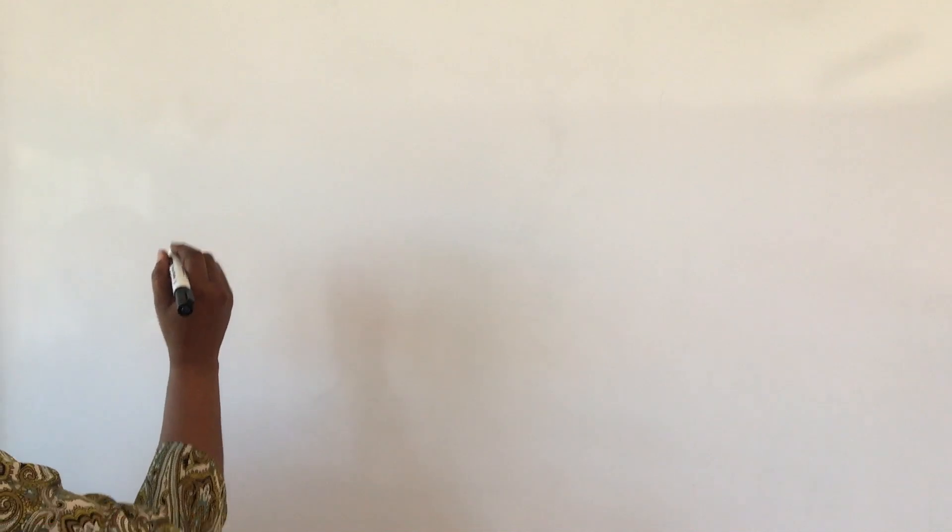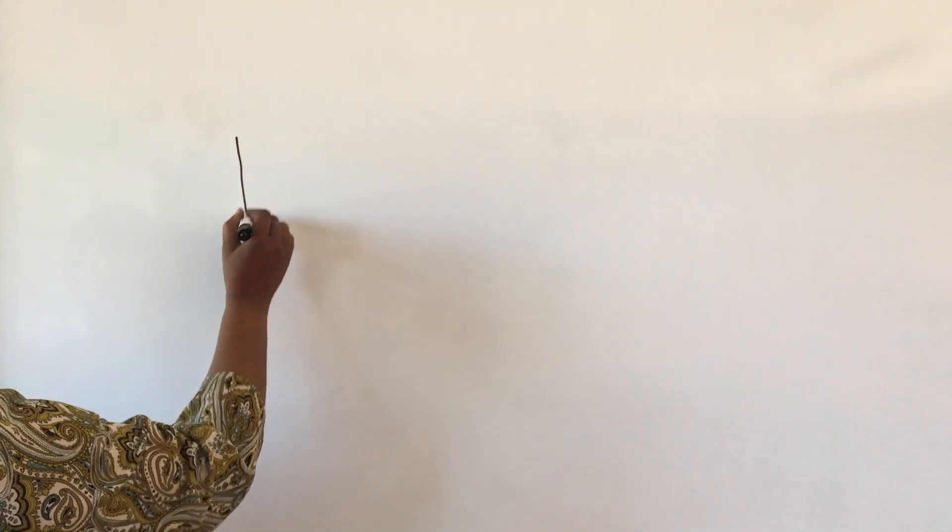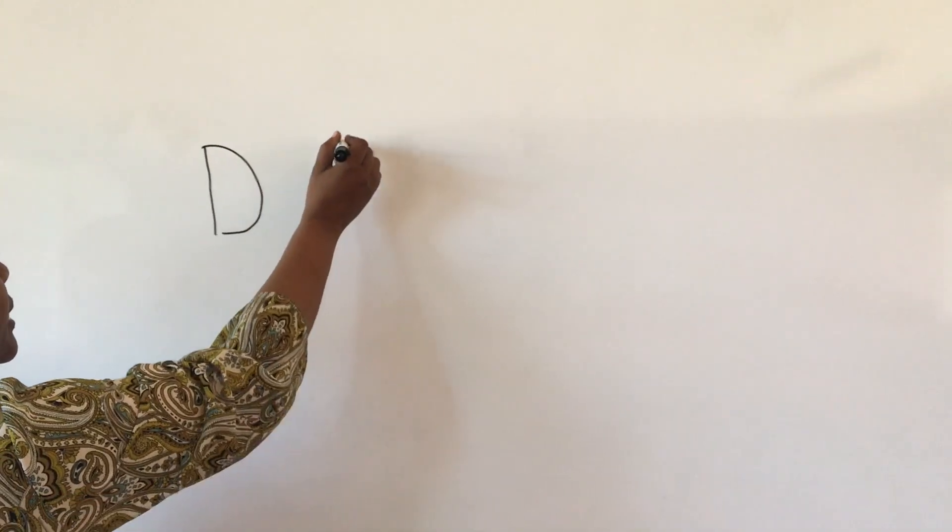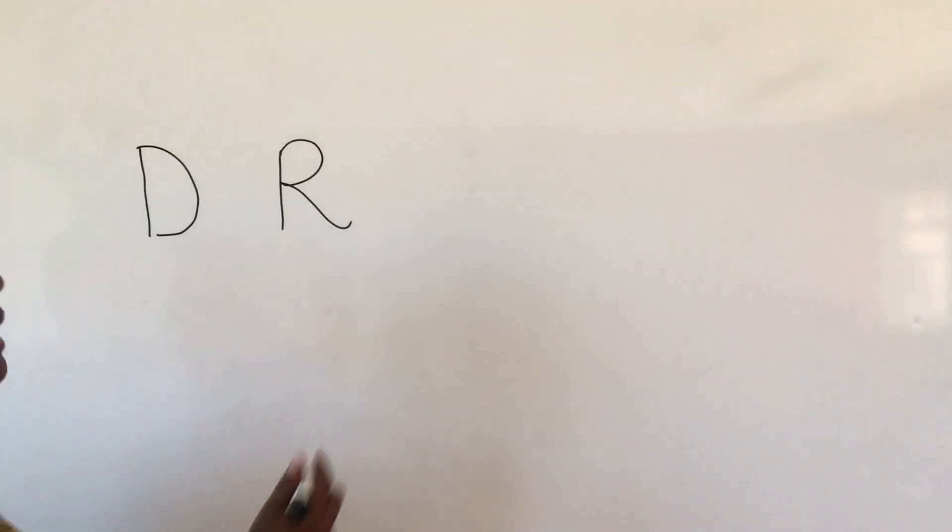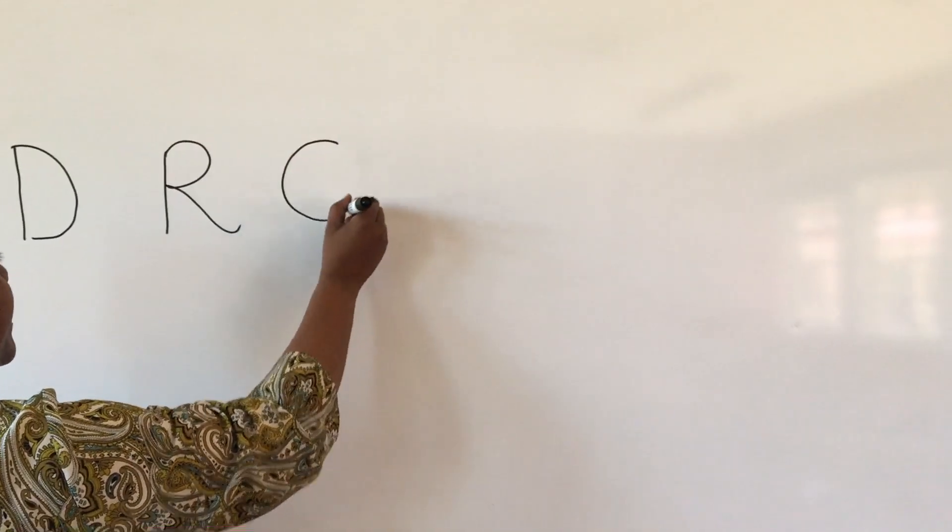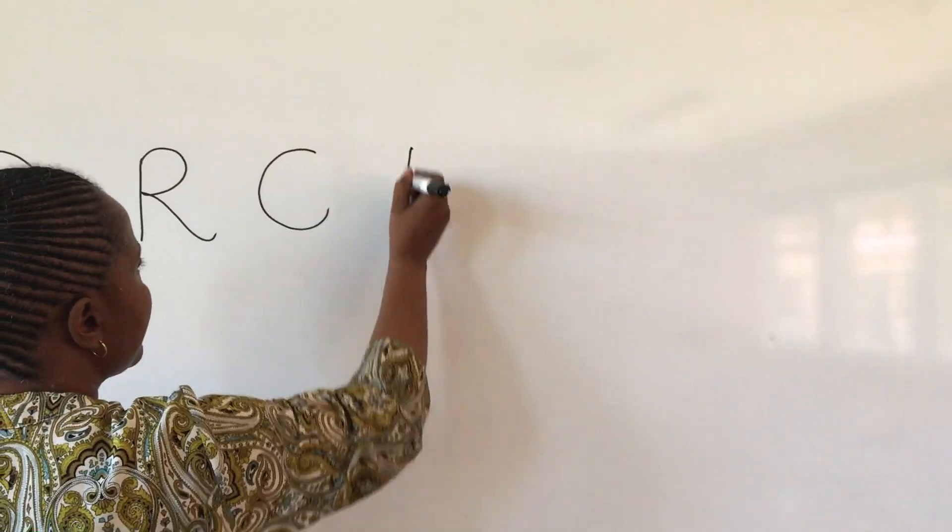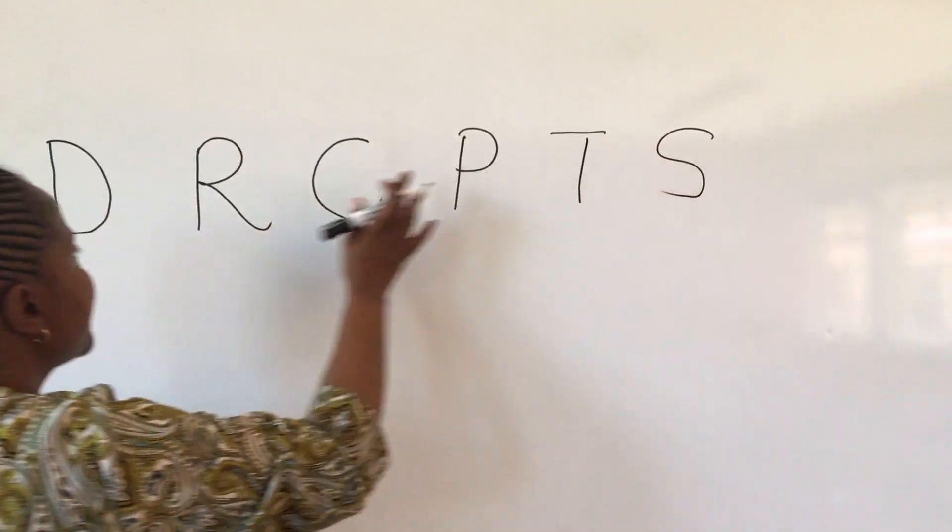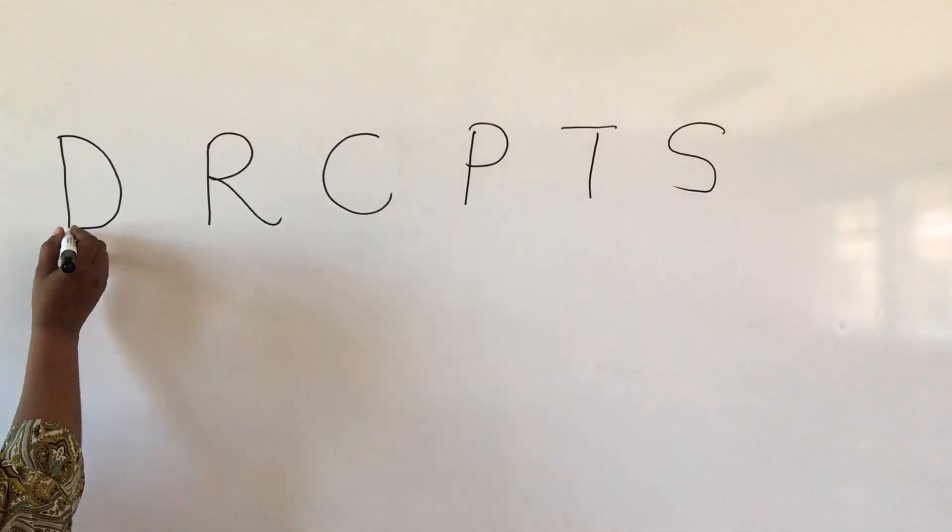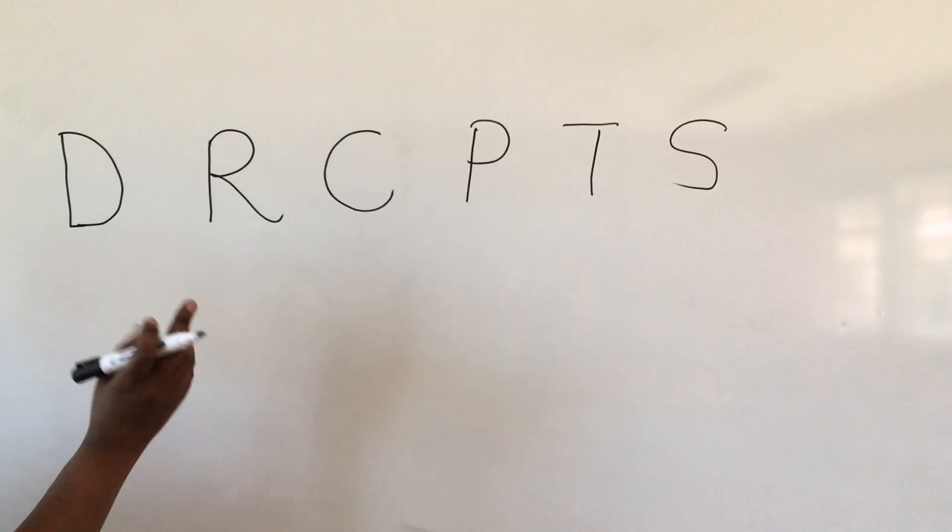So the first thing is Doctor. Doctor is D-R-C-P-T-S. So you have D, Doctor, then C-P-T-S. Each symbol here represents one or two theorems.